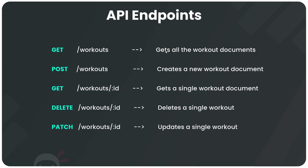We'll have a GET request handler to `/workouts` which gets all workout documents from the database and sends them back in JSON format. A POST request to `/workouts` would create a new workout document. Then a GET request to `/workouts/:id` — where the id is a route parameter — gets a single workout. A DELETE request to `/workouts/:id` deletes that workout, and finally a PATCH request to `/workouts/:id` would update certain fields inside a workout.